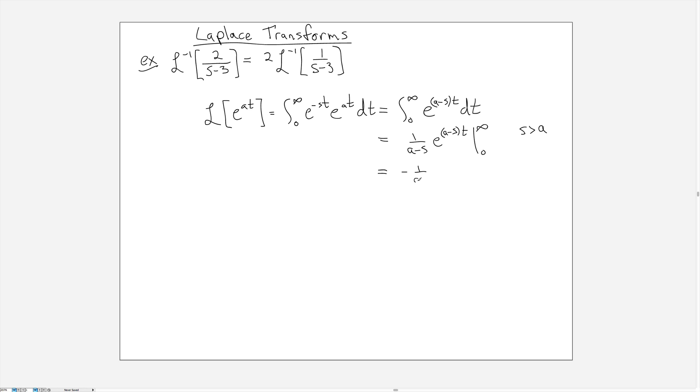So I can rewrite this as 1 over s minus a. Now you can see that the Laplace transform of e to the at is always 1 over s minus a. Well, we have a case here where we're looking for the inverse transform of something of exactly this form, where a is just 3.